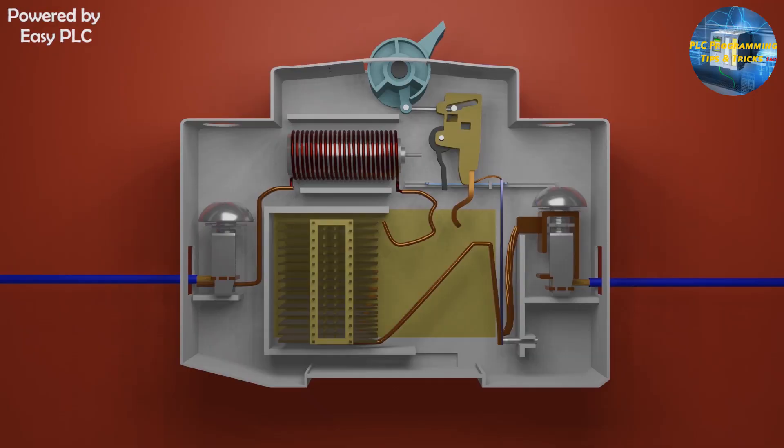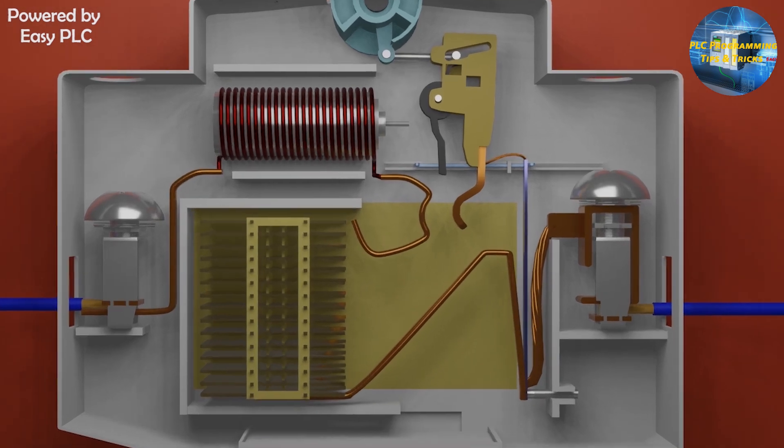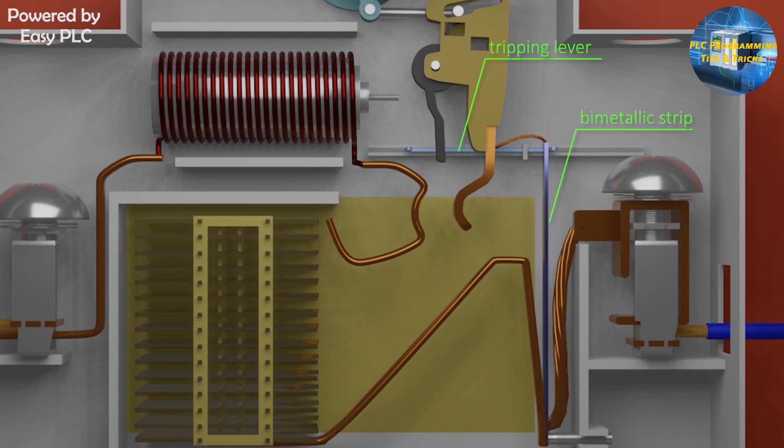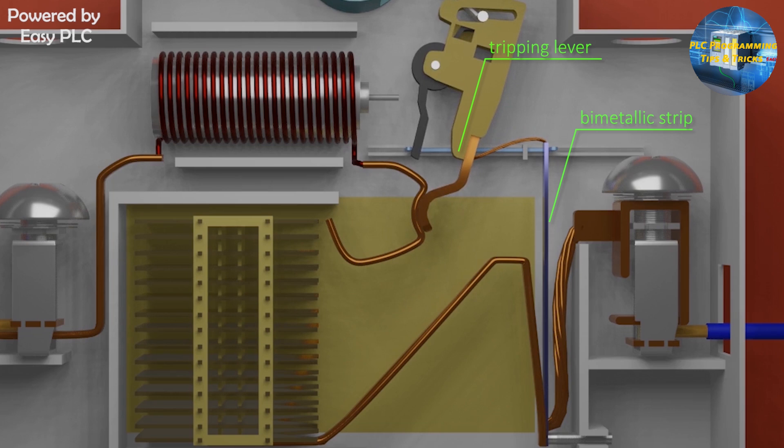Next we have a mechanism to trip the MCB in case of the overload current. This mechanism consists of two things: number one, bimetallic strip, and number two is a tripping lever. Bimetallic strip and the tripping lever work together as an overcurrent safety mechanism. When an excessive overload current passes through the bimetallic strip, this bimetallic strip gets heated and starts to bend.